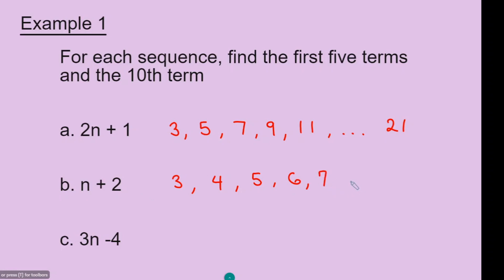Now to find the tenth term, n will be 10. So 10 plus 2 equals 12.